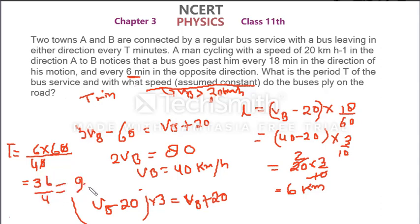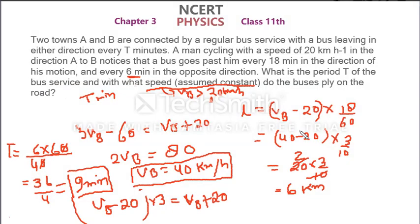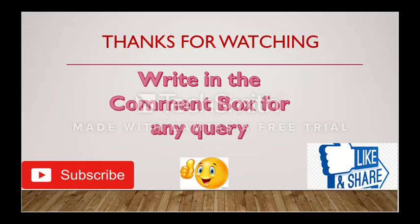That is 9 minutes and your final answer is VB is equal to 40 km per hour. Thank you, I hope that this answer will come to you. And if you haven't even understood, then you can write me in the comment box and tell me which part you have frustrated or what you haven't understood. And then next question I will take, but I want you to write me in the comment box and tell me which answer you want me to do. Thank you for watching.